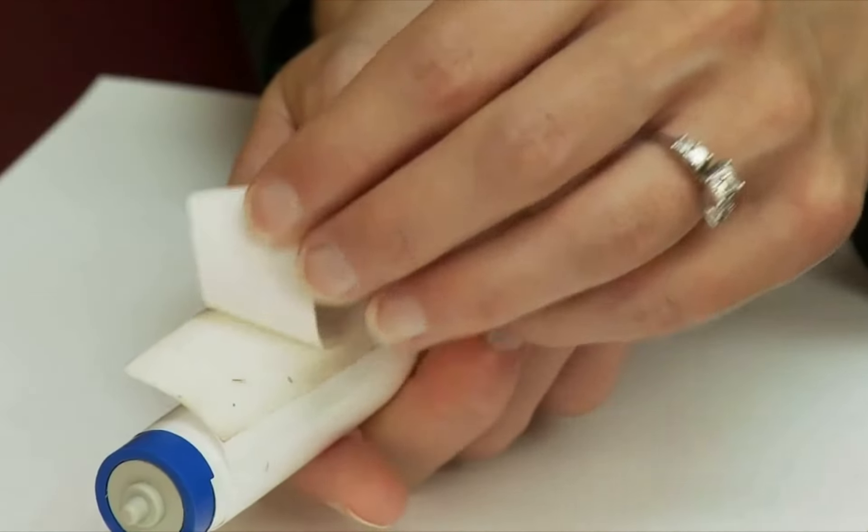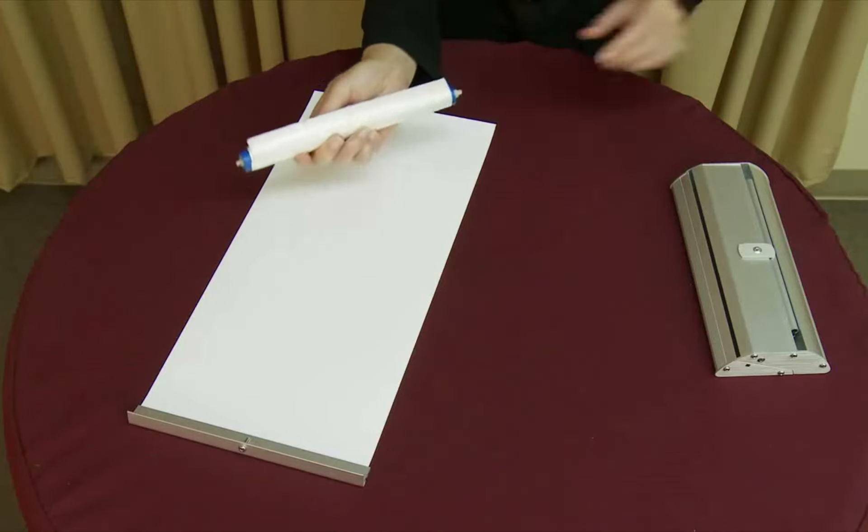Remove the protective strip from the roller's tape leader and attach the adhesive strip to the bottom of your graphic.